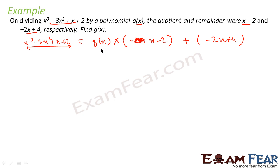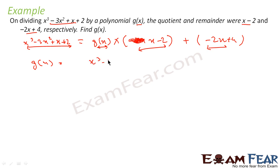We need to find g(x). Rearranging: g(x) = [x³ − 3x² + x + 2 − (−2x + 4)] / (x − 2), which simplifies to g(x) = (x³ − 3x² + 3x − 2) / (x − 2). So we need to divide x³ − 3x² + 3x − 2 by (x − 2).